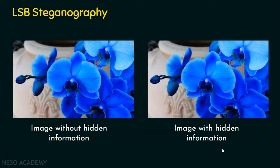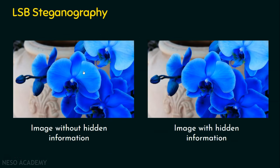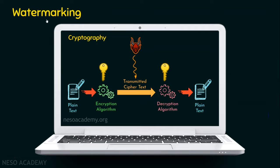People often confuse image steganography or LSB steganography with watermarking. As you can see in this video, there is a watermark which is visible — it is not hidden and is purely for authentication purposes. In contrast, with image steganography, hidden information is embedded in every pixel and is completely invisible. If hundreds of images are given to a user, they cannot find which image contains hidden information. This difference is key: watermarking is visible and for authentication, while LSB steganography hides data invisibly.